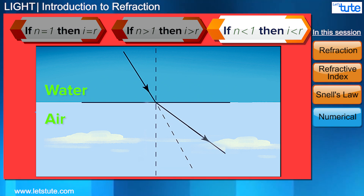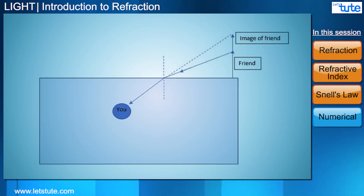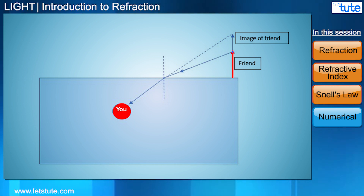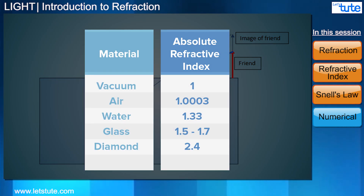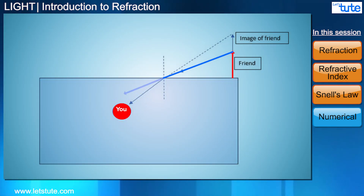Now that we know all this, we can finally understand why our friend looks taller when viewed from underwater. If you look at this diagram, this is you underwater and this is your friend standing up. If we take one ray coming from the head of your friend, it will reach the water at some angle. But the refractive index of water with respect to air is 1.33, which is greater than 1.